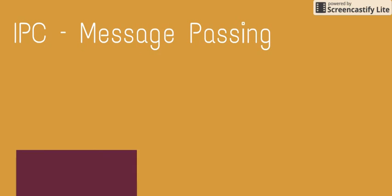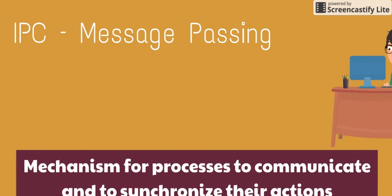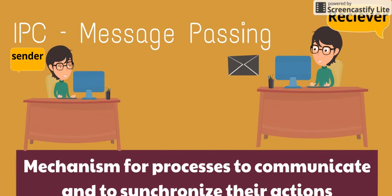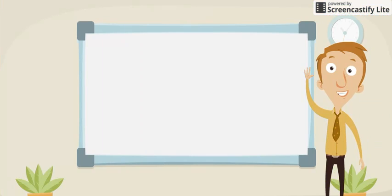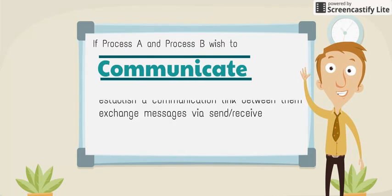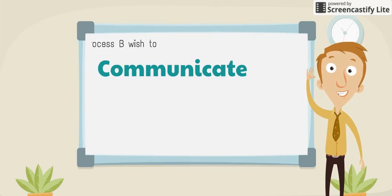IPC is a mechanism for processes to communicate and to synchronize their actions. If process A and B wish to communicate, they need to establish a communication link between them, then exchange messages via send or receive operations.